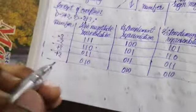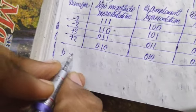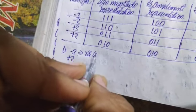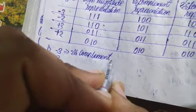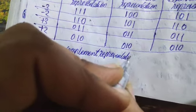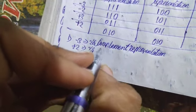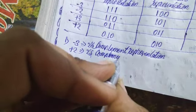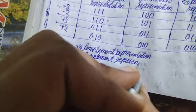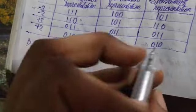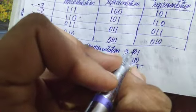Now let us find this addition. For the first case we have minus three plus two. The two's complement representation of minus three is one zero one, and for plus two it is zero one zero. So let us add both of them. We are going to have one one one, and this carry one comes right here.